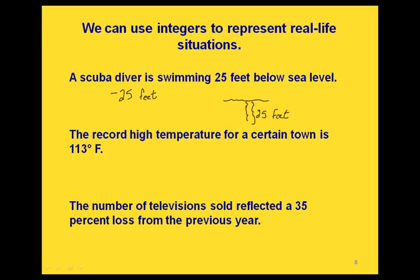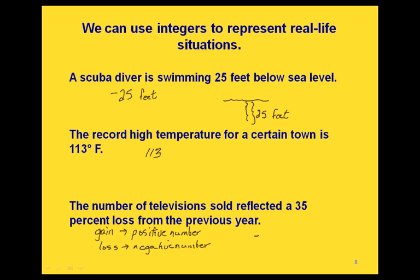If someone was above the ocean level, we'd have a positive number. The record high temperature for a certain town is 113 degrees Fahrenheit — we represent this as positive 113. And if the number of televisions sold reflected a 35% loss from the previous year: when talking about money, a gain is represented by a positive number, while a loss translates to a negative number — so a 35% loss would be represented as negative 35%.